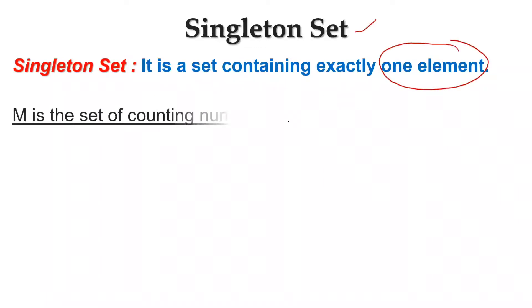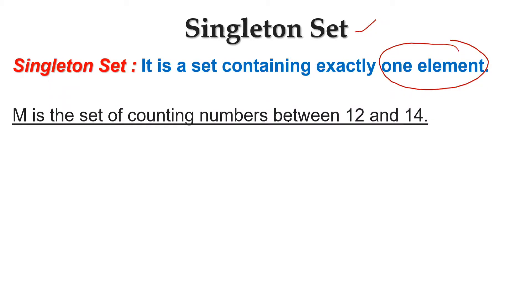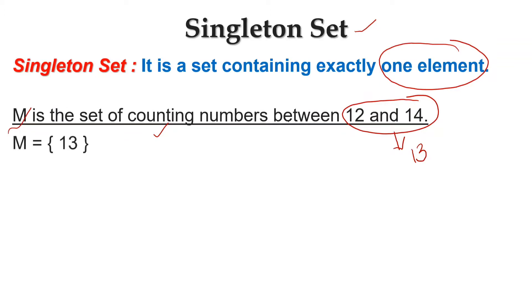Let's see some examples. Here M is the set of counting numbers between 12 and 14. We know that there is only one counting number between 12 and 14, that is 13. So the element of set M is 13. This set has only one element, so n(M) equals 1. Therefore, M is a singleton set.